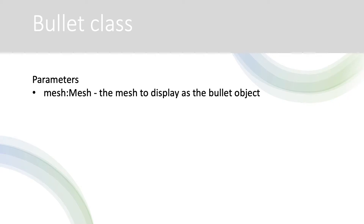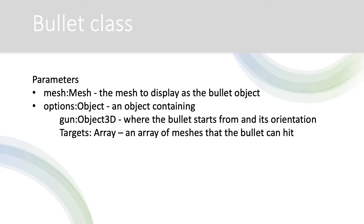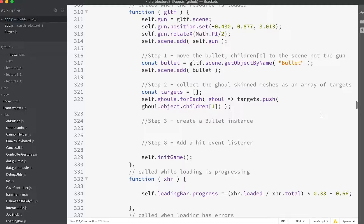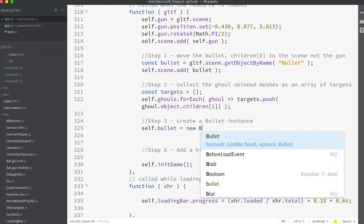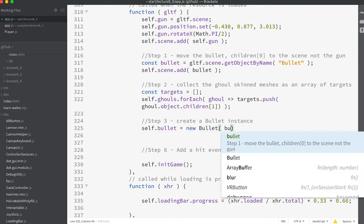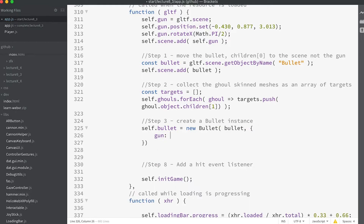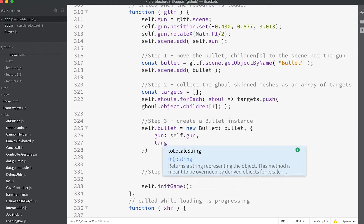Now we have the necessary information to create a bullet instance. A bullet needs the mesh used to display the bullet, a gun object that defines the starting point and orientation for the bullet as it's fired, and an array of meshes that the bullet can intersect. We have all that, so for step three enter: `self.bullet = new Bullet(bullet, gun, self.gun, targets)`.